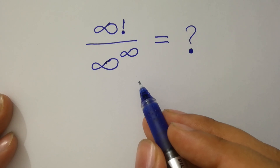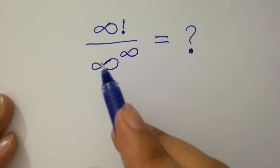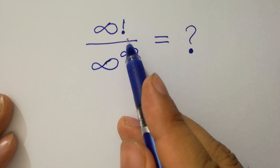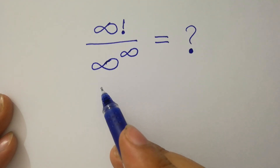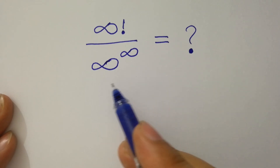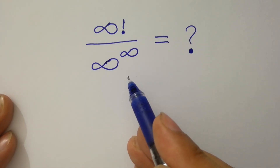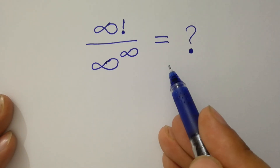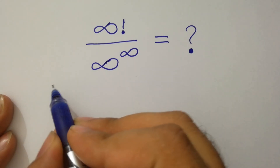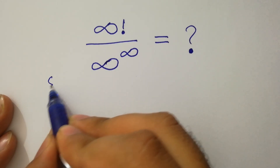Hello friends. Infinity factorial over infinity to the power infinity is equal to what? Let's have a solution.